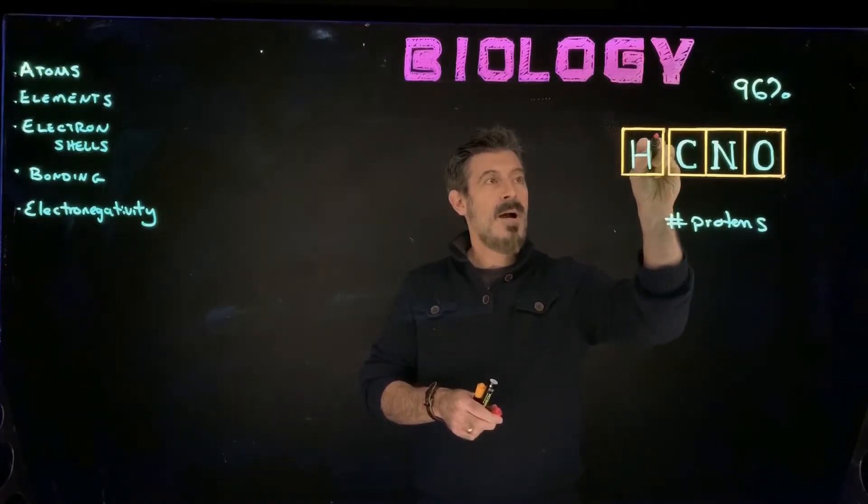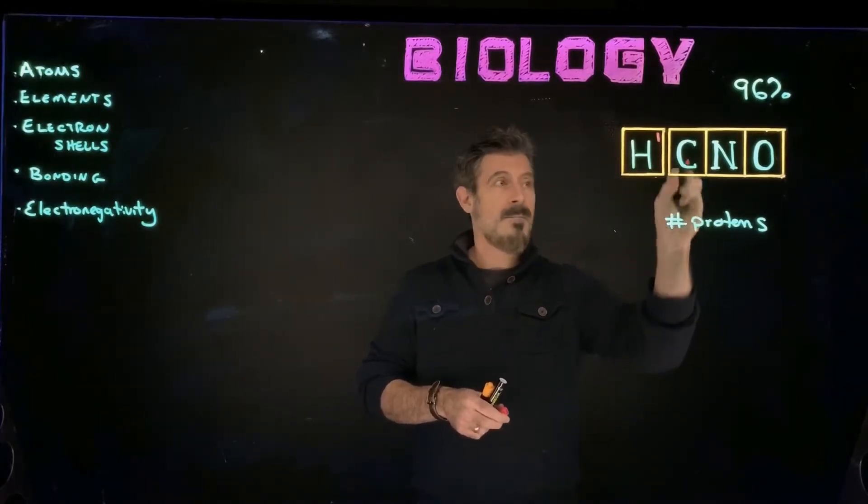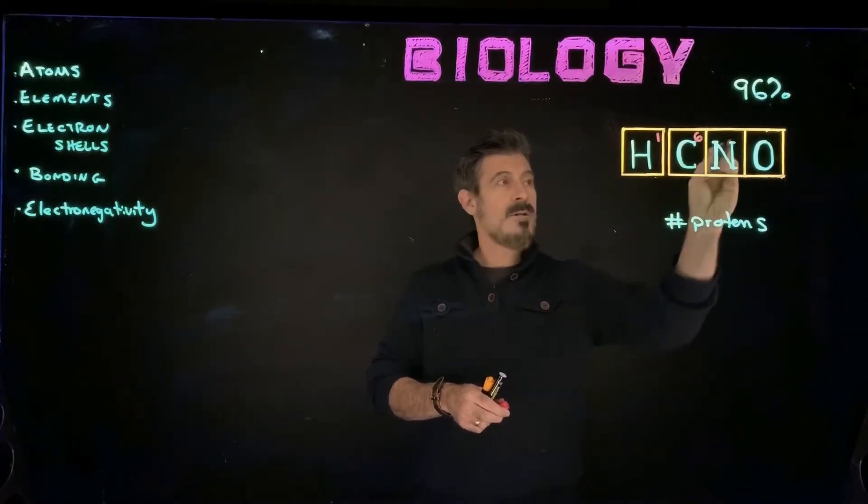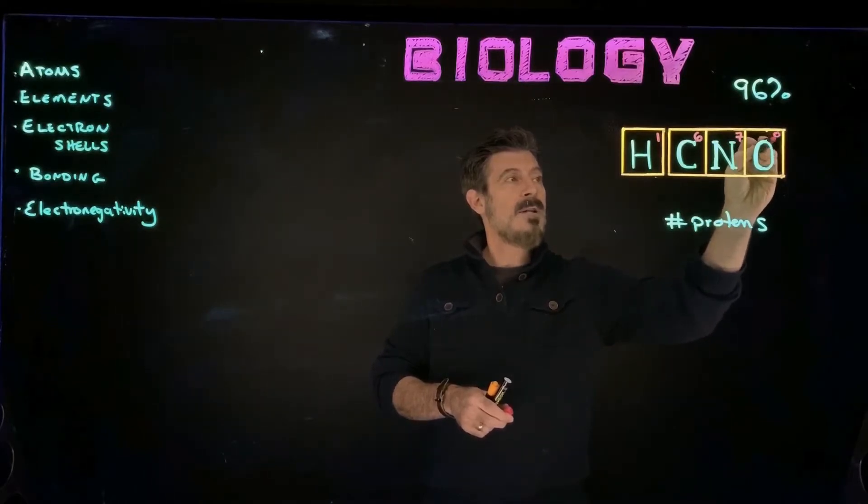So for atomic number, hydrogen is an atomic number of one, that means one proton. Carbon, an atomic number of six, six protons. And then nitrogen, seven, and oxygen, eight.